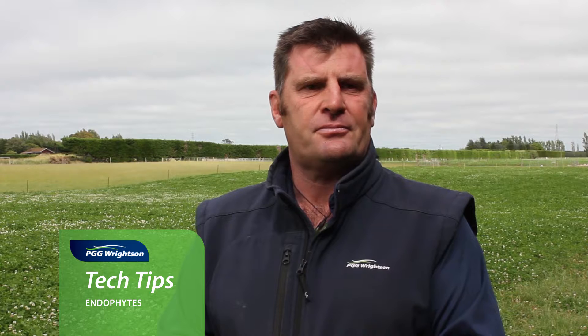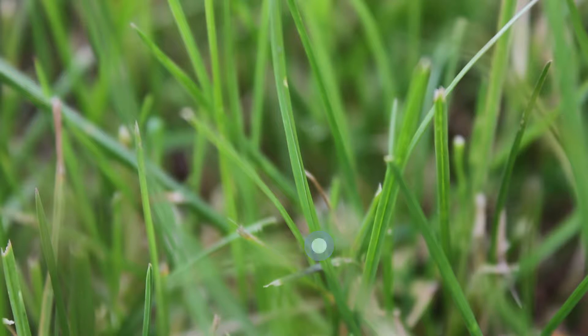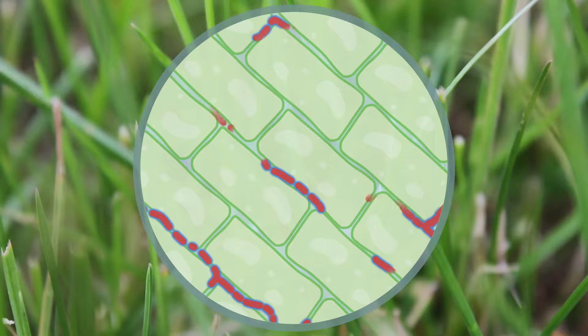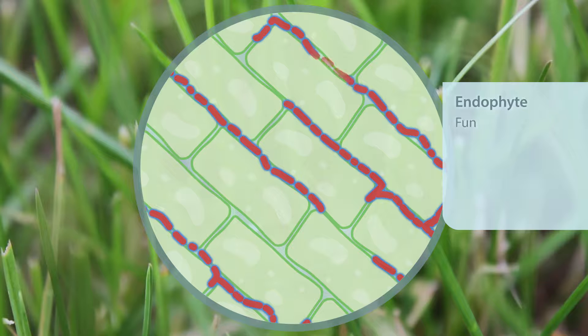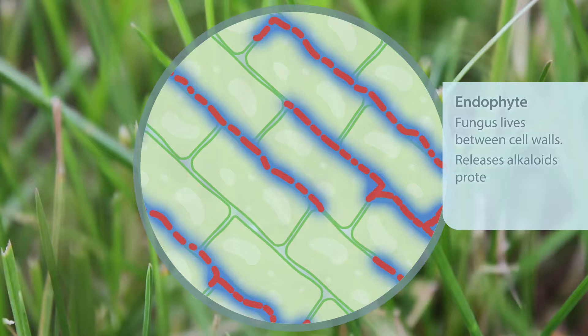So what are endophytes? An endophyte is a fungus that naturally occurs in many grass species including rye grasses and fescues. They live in the plant between the plant cells and take a little bit of plant nutrient from the plant. In return they protect the plant from insect attack. This is done by giving off alkaloids.